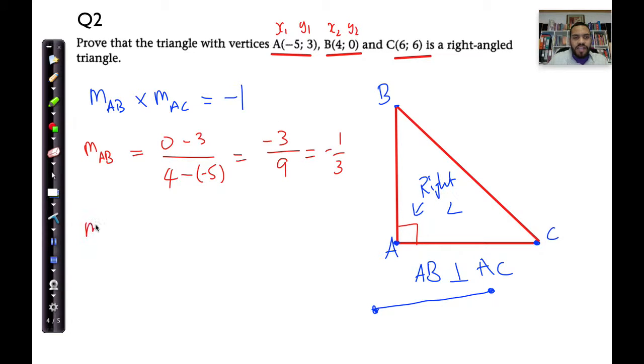Now let's find the gradient of MAC. What does this give me? Well, this will now be my set of 2s, and that will be 6 minus 3 divided by 6 minus (-5). That gives me 3, and 6 plus 5 is 11. So that is MAC.